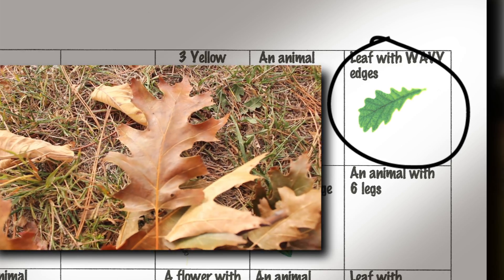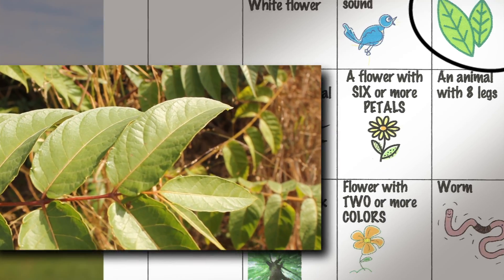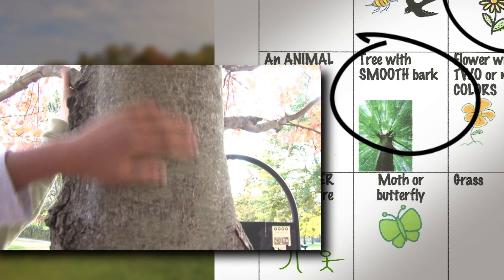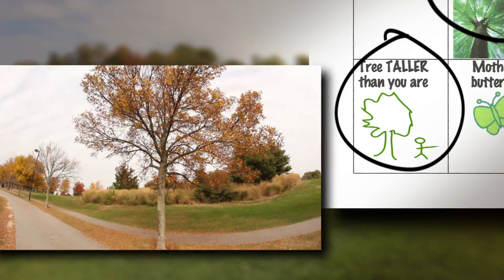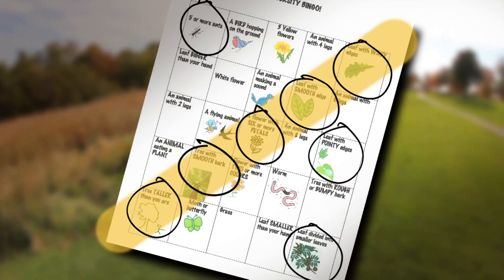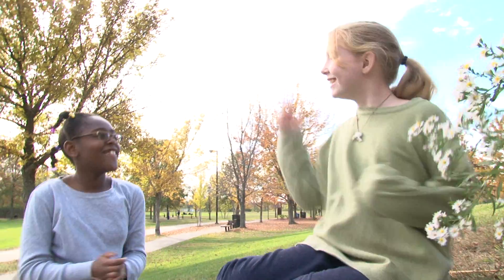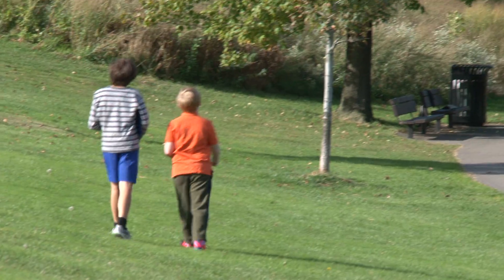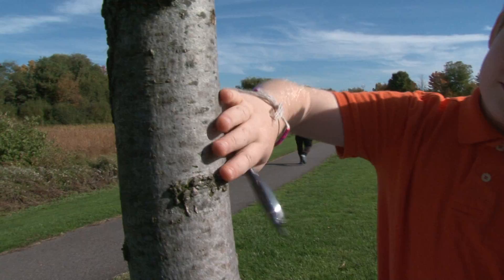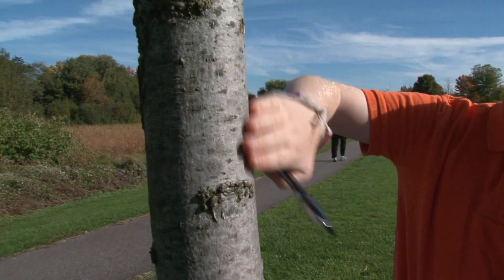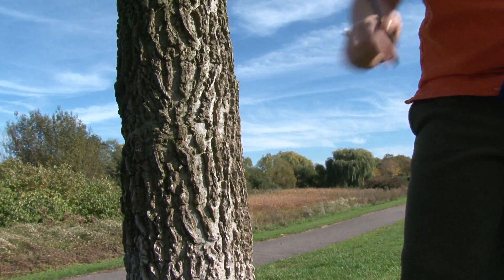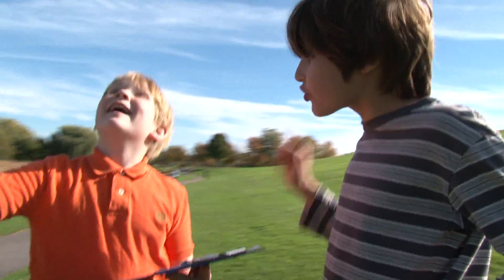A leaf with wavy edges, a leaf with smooth edge, a flower with six rubber petals, a tree with smooth bark, and a tree taller than you are — we got bingo! I think that me and Zuzu won, because we got our first one in ten minutes and they took half an hour. This tree can give us two squares — here it has smooth bark, here it has rough bark, and that one says a tree that's taller than you. That's three!